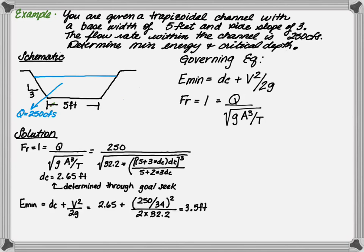By plugging this in to the specific energy equation and determining the velocity of this channel, we determine that the specific energy is 3.5 feet. This is the minimum energy of the channel.